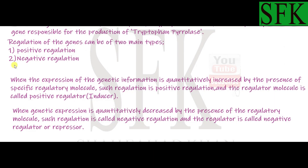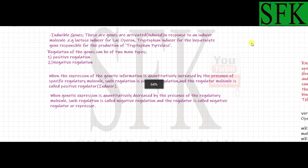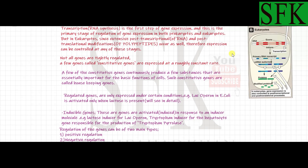Negative regulation is a type of regulation in which the expression of the gene is quantitatively decreased by the presence of the regulatory molecule. In this case the regulatory molecule is called a repressor molecule or negative regulator — it inhibits the expression of a particular gene. In positive regulation the regulator promotes expression, while in negative regulation the repressor decreases or inhibits it.